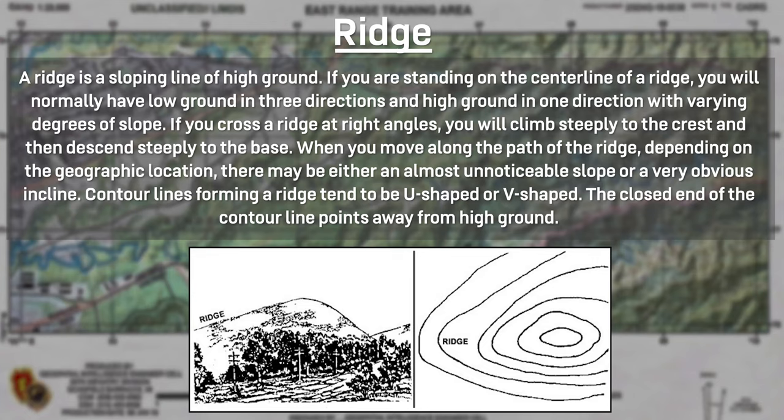A ridge is a sloping line of high ground. The center line of a ridge normally has low ground in three directions and high ground in one direction with varying degrees of slope. If a ridge is crossed at right angles, a soldier climbs steeply to the crest then descends steeply to the base. When moving along the path of the ridge there may be either an almost unnoticeable slope or a very obvious incline. Contour lines forming a ridge tend to be U-shaped or V-shaped, with the closed end of the contour line pointing away from high ground.